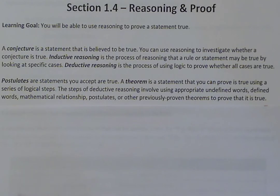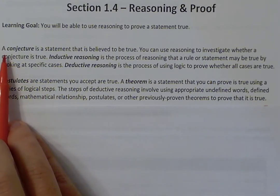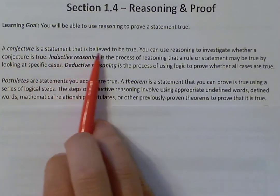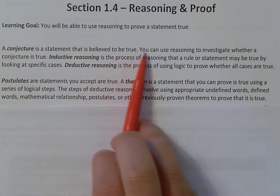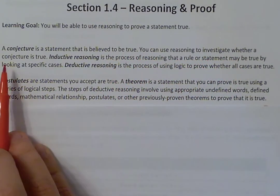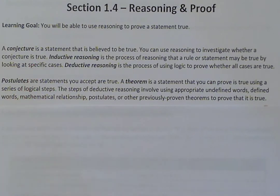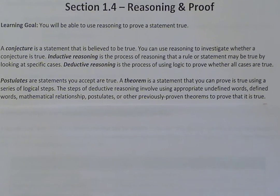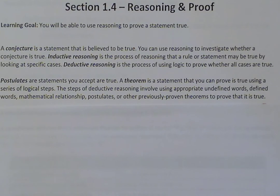First, we're going to take a look at a conjecture. A conjecture is a statement that is believed to be true, and we can use reasoning to investigate whether a conjecture is true. An example of a conjecture would be the idea that every October it is raining and cold — something I believe to be true, just my statement.